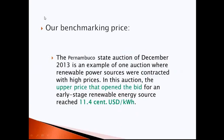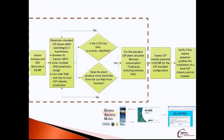We took as a benchmarking price of electricity the upper price that opened the bid in the Pernambuco State Auction, which happened in December 2013. The upper price in that auction was 11 cents per kilowatt-hour. Based on that, we simulated 30 megawatt CSP biomass hybridized power plants subject to two important restrictions: first, to produce electricity with a levelized cost of electricity less than 11 cents per kilowatt-hour; and second, that more than 51 percent of the annual electricity production should come from steam production from the solar field. This means we looked for a solar power plant hybridized with biomass, and not the opposite.